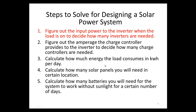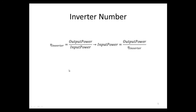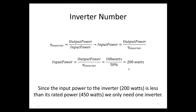Step one is to figure out the input power to the inverter when the load is on, to decide how many inverters are needed. The general efficiency equation is: efficiency equals output power over input power. Since we know the output power of the inverter is 100 watts and the efficiency is 50%, we solve for input power: input power equals output power divided by efficiency, giving us 200 watts. Since the maximum power rating of the inverter is 450 watts and we're only supplying 200 watts, we only need one inverter. If we got greater than 450 watts, we would need more than one.